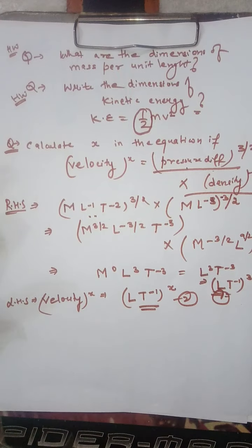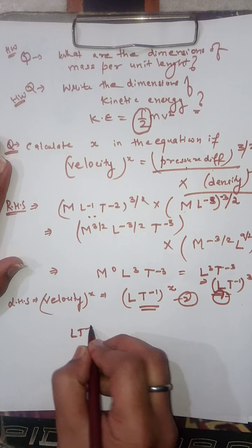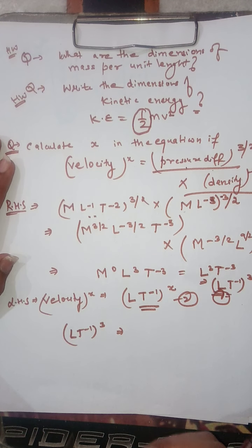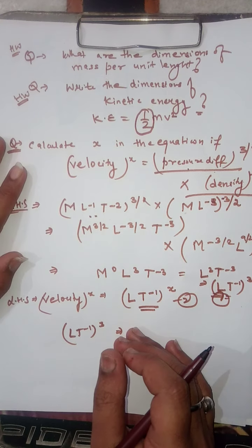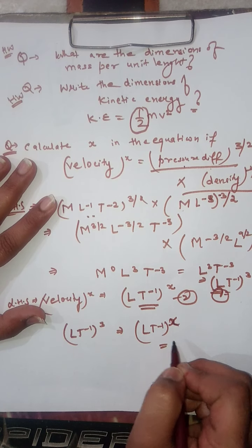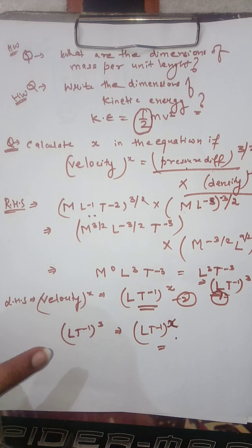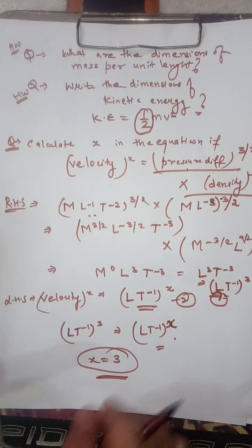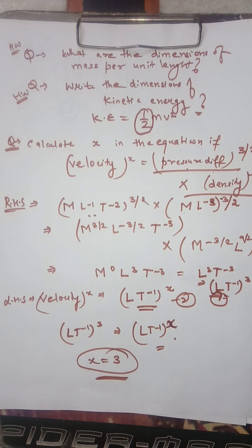Comparing the two equations: the left hand side is (L T⁻¹)^x and the right hand side is (L T⁻¹)^3. Comparing both equations, the value of x is 3. So the value of x obtained is 3.